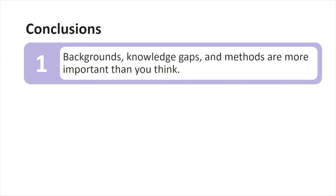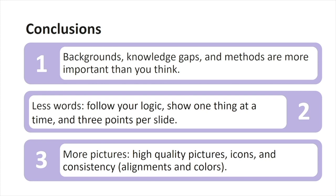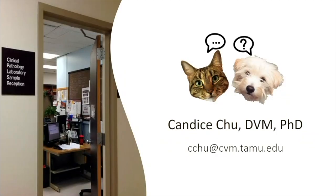To wrap up today's talk: first, recognize how important background, knowledge gaps, and methods are for your audience. Second, put fewer words on your PowerPoint by following your logic, showing one thing at a time, and keeping it to three major points per slide. The last part: use more pictures — high quality pictures and high quality icons — and make sure you are consistent throughout your presentation with your alignments and the colors you choose. My email is here and my office is on the second floor in the clinical pathology lab — shoot me an email or discuss with me after the talk. Thank you.